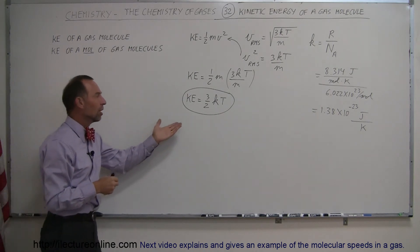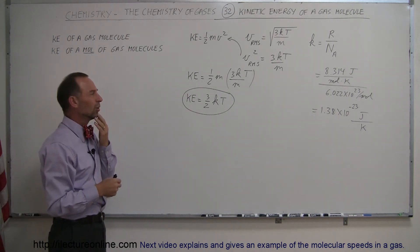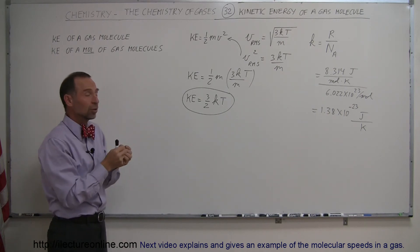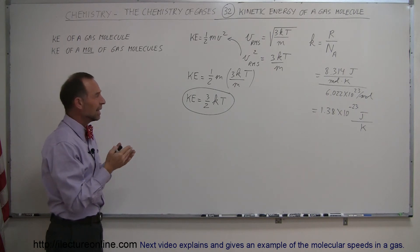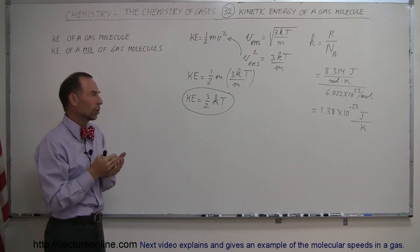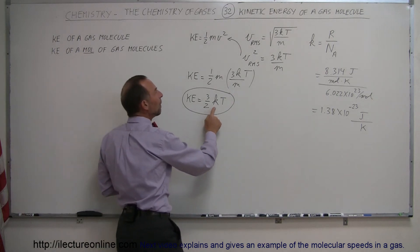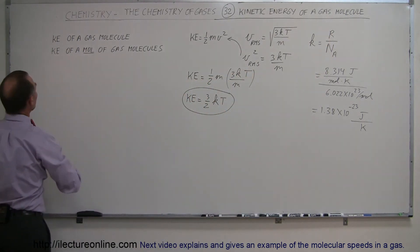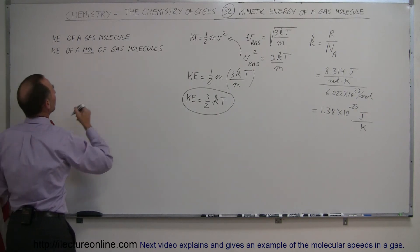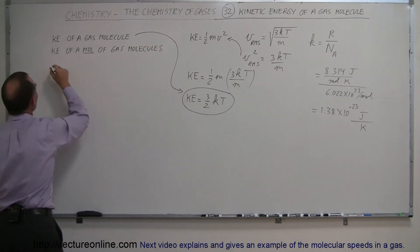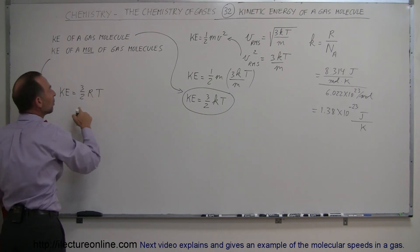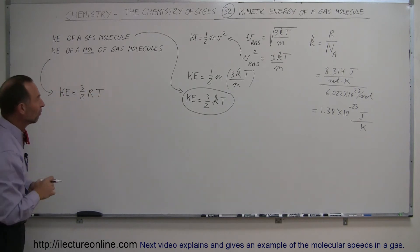Now, that would be the kinetic energy of a single molecule, which, for most instances, doesn't make a lot of sense to calculate the kinetic energy of a single molecule. You'll be more interested, typically, in the kinetic energy per mole of molecules. Then, instead of using K, we go back and use the traditional constant R. If you want to know the kinetic energy of a mole of gas molecules, so this would be the kinetic energy of a single molecule, then the equation becomes kinetic energy is equal to 3 over 2R times T, and that would be for a whole mole of molecules.